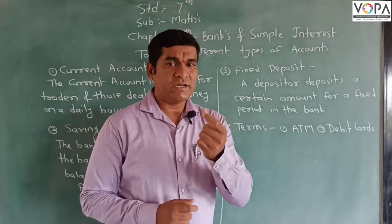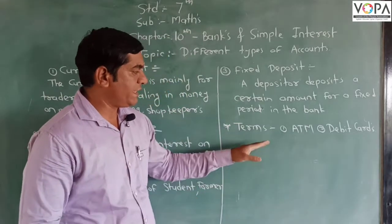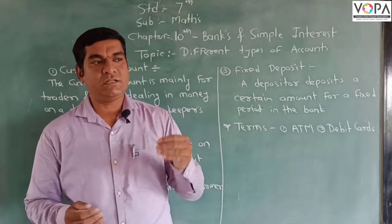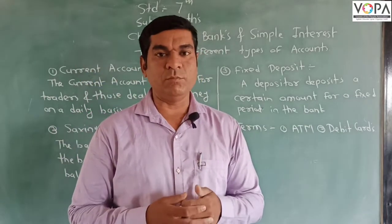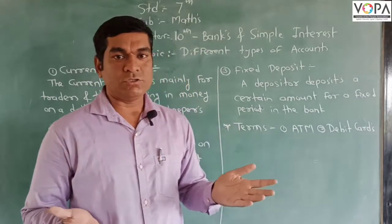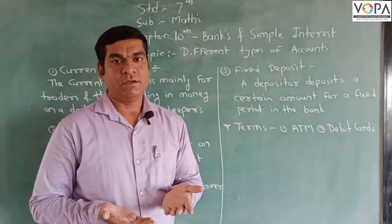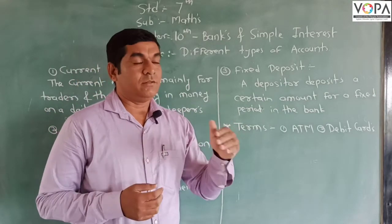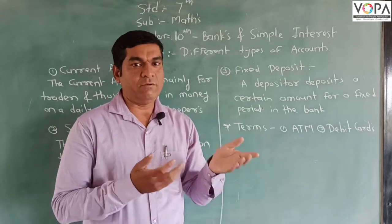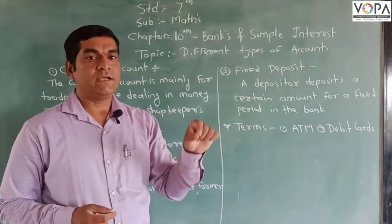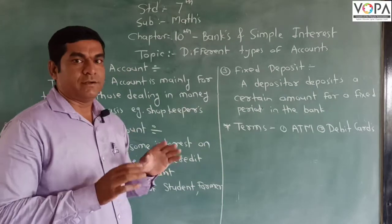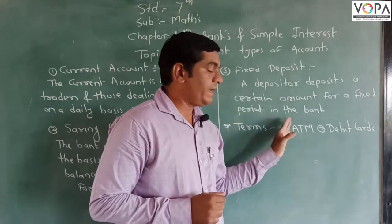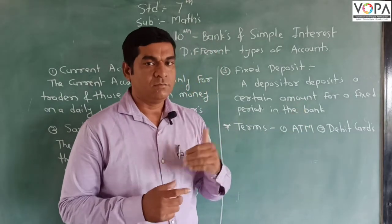The terms related to banks include ATM and debit cards. What do we mean by ATM? Suppose at late night, around 7 or 8 o'clock, you require money, but the bank is closed. The amount is yours but the bank is closed, so you cannot go to the bank to get money. For this need, the banks help through the ATM, and from that ATM we get the money.